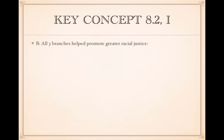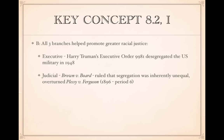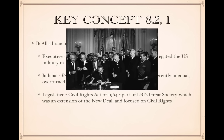All three branches helped promote greater racial justice. Within the executive branch, Harry Truman's Executive Order 9981 desegregated the U.S. military in 1948 — the first war fought with desegregated troops was the Korean War. For the judicial branch, Brown v. Board of Education ruled that segregation was inherently unequal, overturning the disastrous 1896 case Plessy v. Ferguson. If you're writing an essay about the civil rights movement and mention Brown v. Board, your synthesis point could be Plessy v. Ferguson.